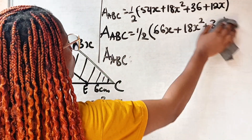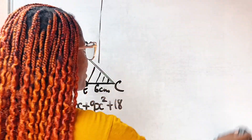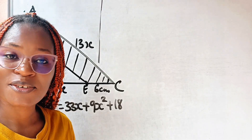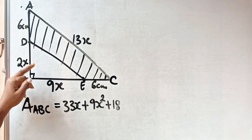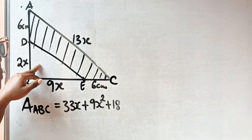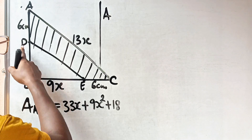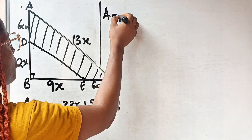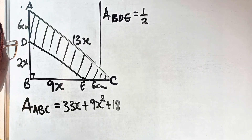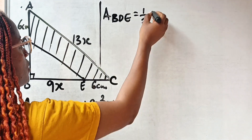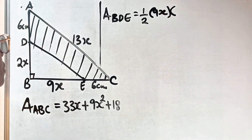Now moving forward, let's find the area of the unshaded portion. So the area of triangle BDE — area of triangle BGE — is half multiplied by the base, and the base is 9x, multiplied by the height, and the height is 2x.